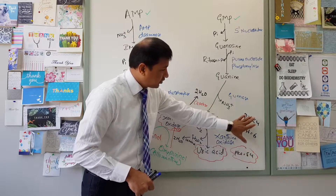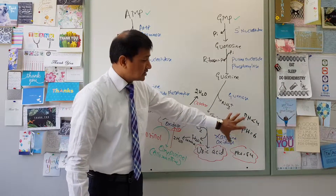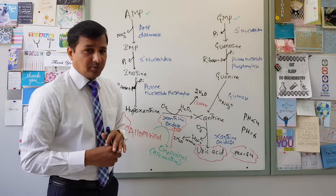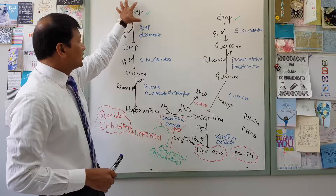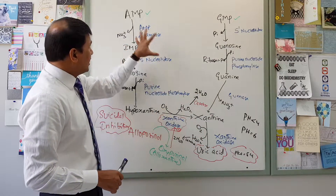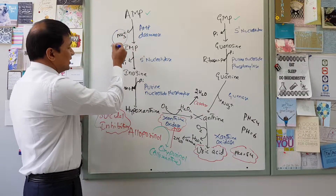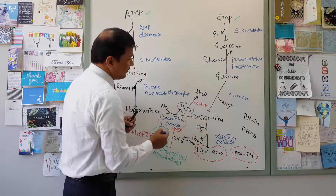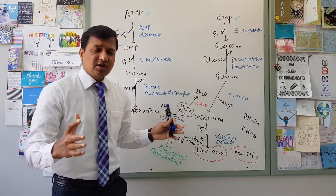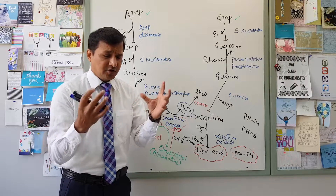To summarize: remember the pKa of 5.4 and the relationship between uric acid and urine pH. Xanthine oxidase is a critically important enzyme. AMP and GMP purine nucleotides are ultimately converted into uric acid. The purine degradation pathway is a source of ammonium ion that must be handled properly, and also a source of hydrogen peroxide that needs to be managed.